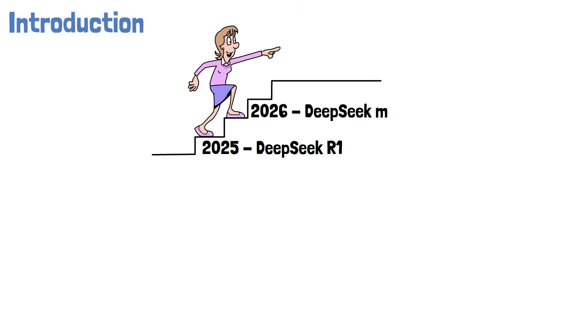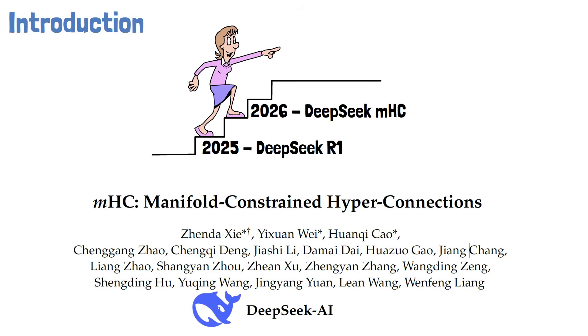About this time last year, DeepSeek revolutionized the AI industry with the release of DeepSeek R1. Now, DeepSeek set a great start for 2026 with a fascinating new paper titled MHC, Manifold Constrained Hyperconnections, which is already generating significant hype as a possible driver for the next major AI breakthrough in 2026.